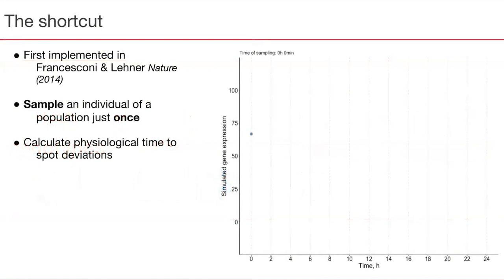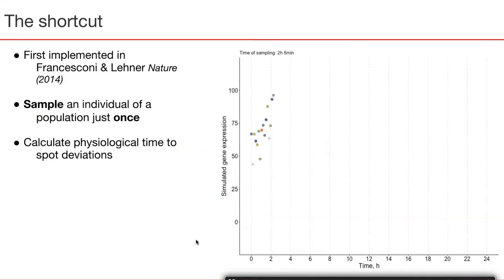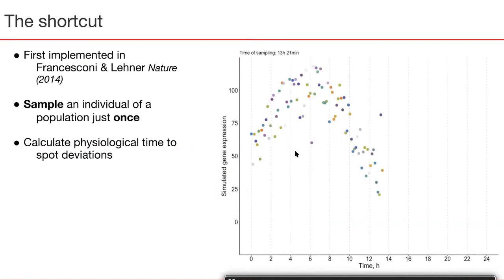Such a sampling strategy was first implemented by Francesconi and Lennon in application to development, and I will demonstrate our adaptation of it to circadian rhythm on this animation. We will sample every genotype of interest just once. However, we will sample genotypes very often — in our case, every nine minutes. We call such samples static transcriptomes. Every dot on the video corresponds to a different genotype, and you can see on the animation that sampling was done very frequently.